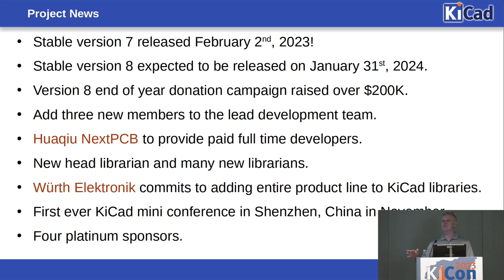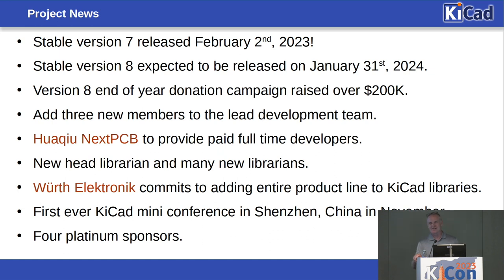One of the problems we've had historically is the library team — we have a lot of contributions, but not enough people to do reviews. In the last two years we've made really good progress: there's a bunch of new tools, we've spun up a bunch of new librarians, and we're starting to make a decent dent in the merge request backlog. For those of you who submitted merge requests for libraries, thank you for your patience.